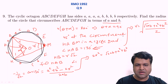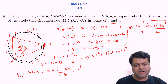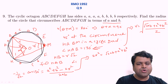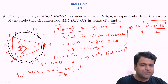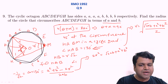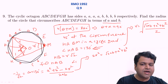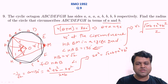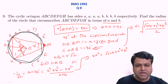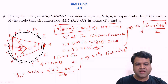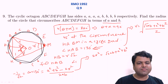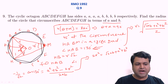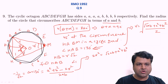This is an easy question as far as RMO level is concerned. The key insight is figuring out that the two adjacent chords a and b subtend a combined angle of 90° at the center. From there, the angle at the circumference is 45°, making angle HAB = 135°, and then applying the cosine rule gives the circumradius directly.